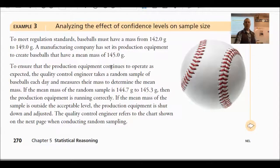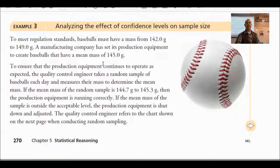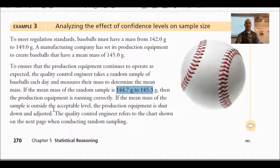To ensure that the production equipment continues to operate as expected, the quality control engineer periodically takes an actual sample and measures it to see what's going on. If too many are way out of ballpark, they have to readjust their equipment. If the mean mass of the random sample is between 144 and 145 grams, then the production equipment is running correctly. If outside this acceptable level, the equipment is shut down and adjusted.